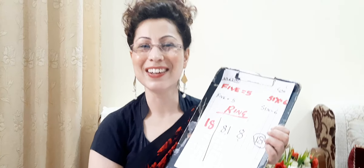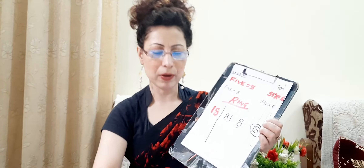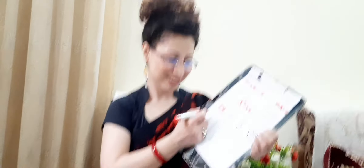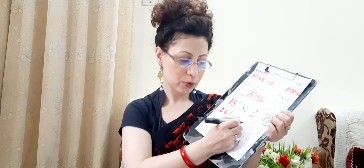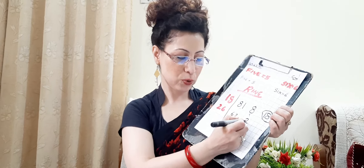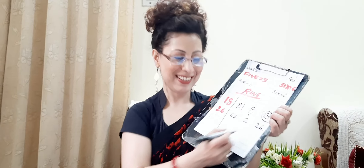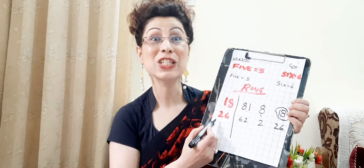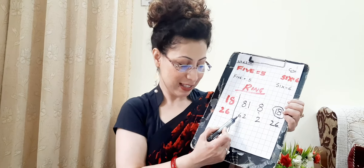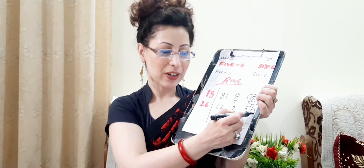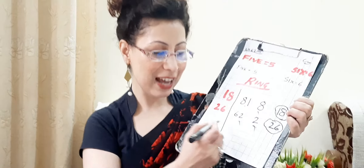Ring the correct answer. Let's take another example — the number 26. I am writing 3 types of numbers. Now read carefully: what is this number? This is 26. Beside 26 there are 3 types of numbers; among them only one will be correct. We have to ring the correct number — is this 26? No. Is this 26? No. Is this 26? Yes — we will ring it. Ring the correct answer.